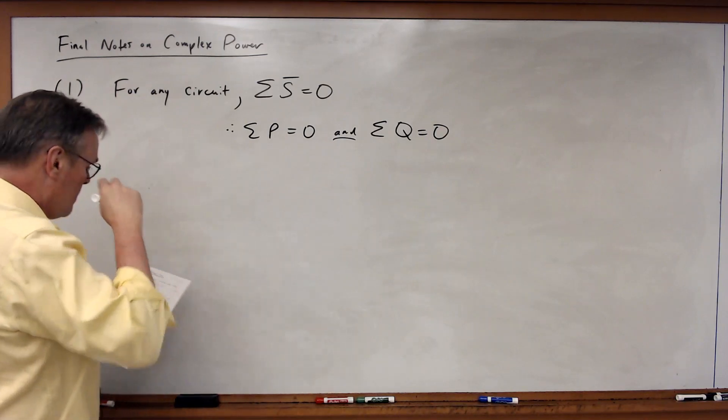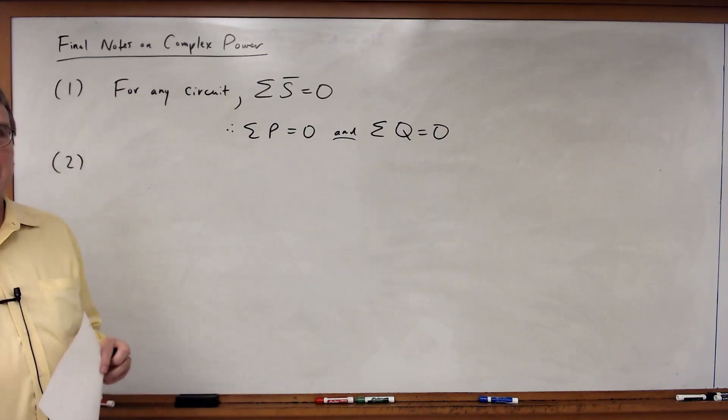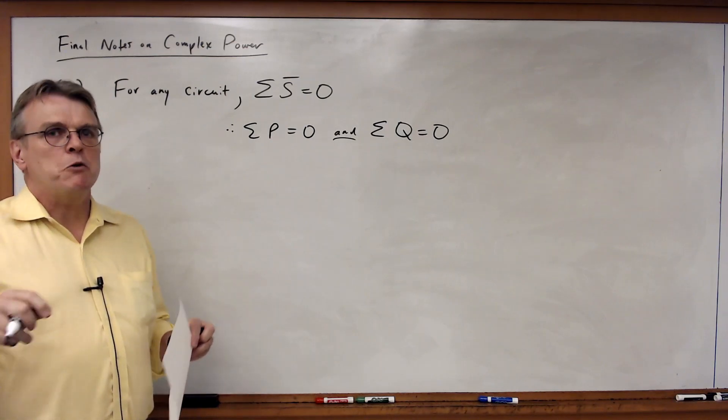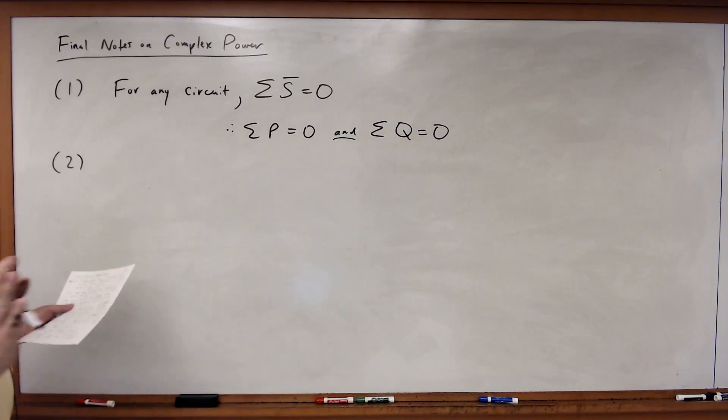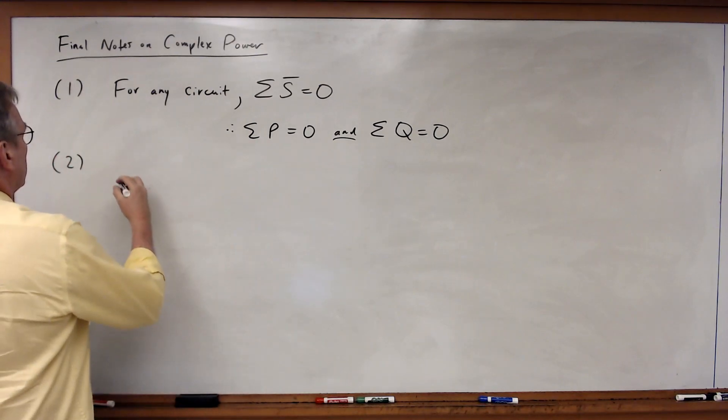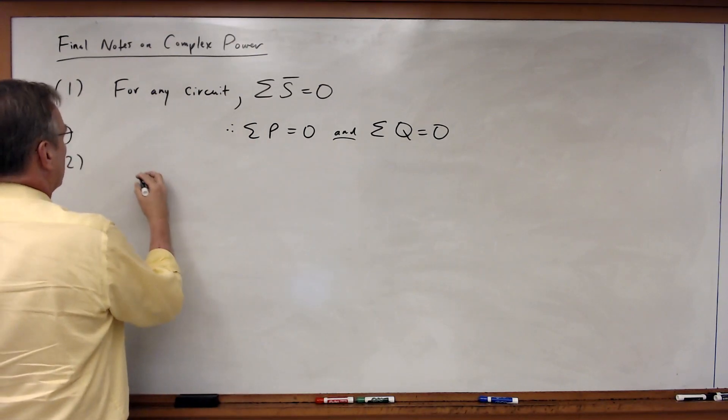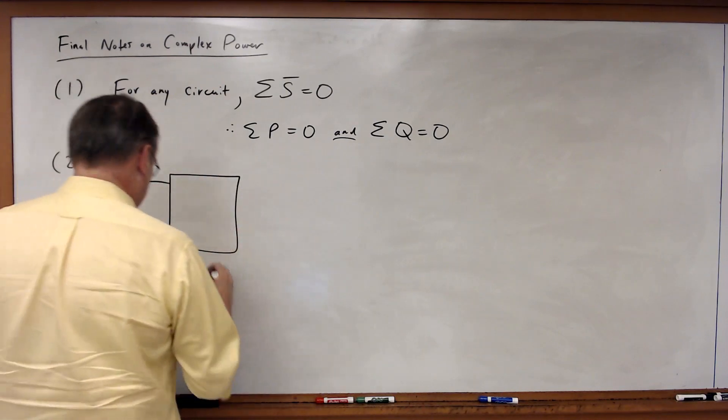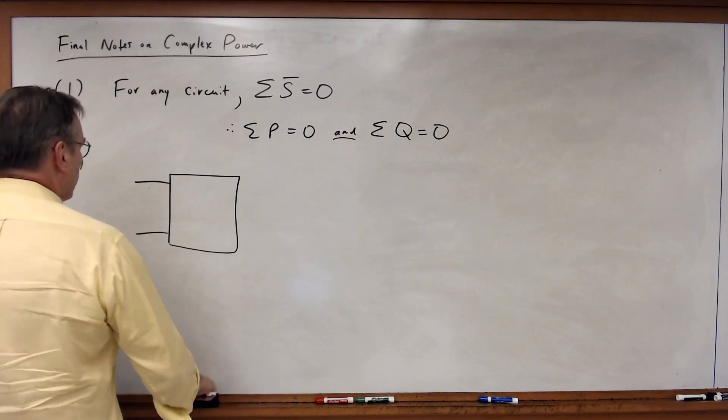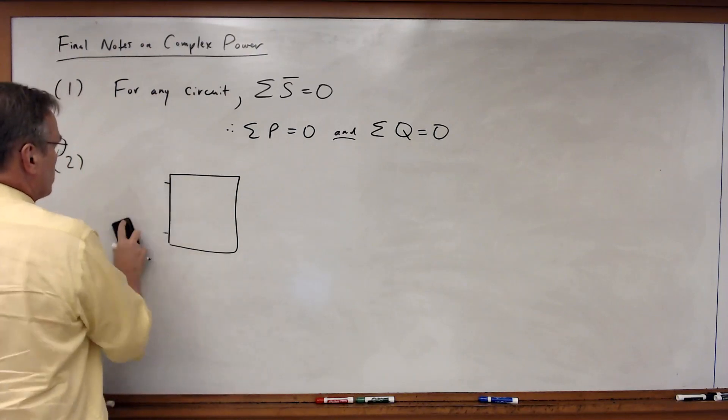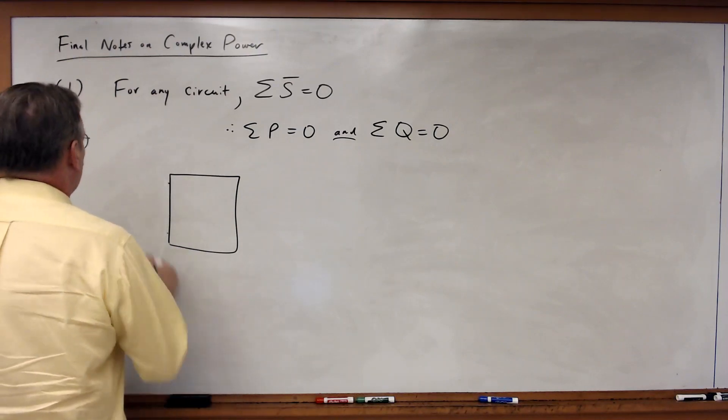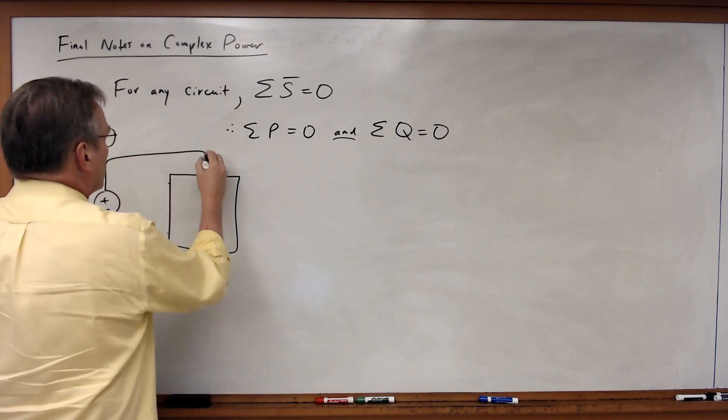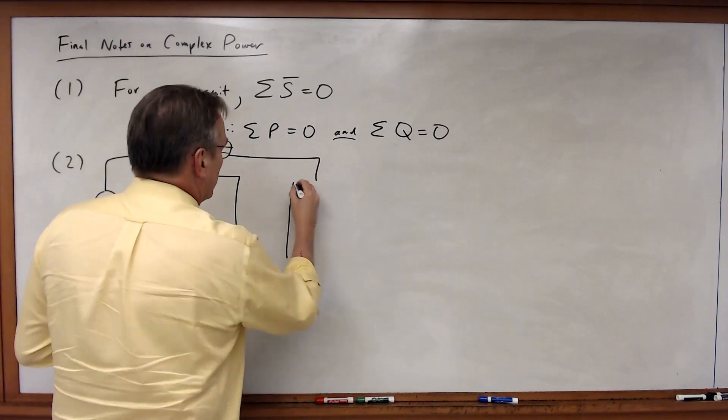Second, when you are adding complex powers together, you want to be careful you do it correctly when you sum them together. So for example, let's say you've got two loads connected in parallel. Let me redraw this a little bit differently. So I've got a source, and I've got one load here, and one load here.